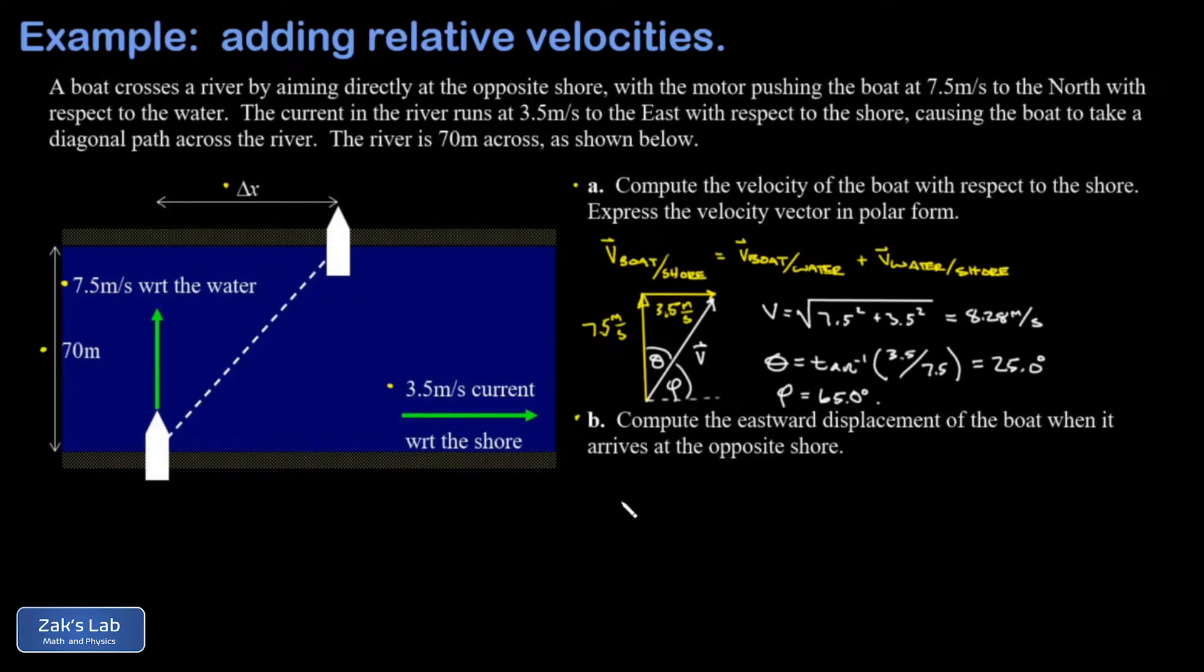...we can just sketch a triangle for the displacement. That's 70 meters to the north, some unknown delta x for the eastward displacement, and I know that it happens at an angle of 25 degrees with respect to the northward direction. This means I can use a tangent function to get access to that delta x. So the tangent of 25 degrees is delta x over 70, so delta x is 70 tangent 25, and when I run the numbers on this I get 32.6 meters.